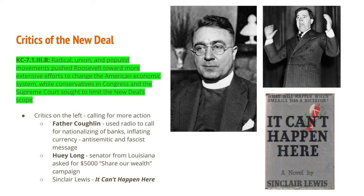Huey Long, a senator from Louisiana, was calling for a $5,000 payment to all Americans funded by taxing the wealthy — his Share Our Wealth campaign. He registered for the 1936 Democratic primary to run against FDR, but was assassinated by a political rival in Louisiana in 1935 before the primary really began. He had a huge following. You can see how some of FDR's eventual policies, like Social Security, were mild versions of what Long and Coughlin were promoting.